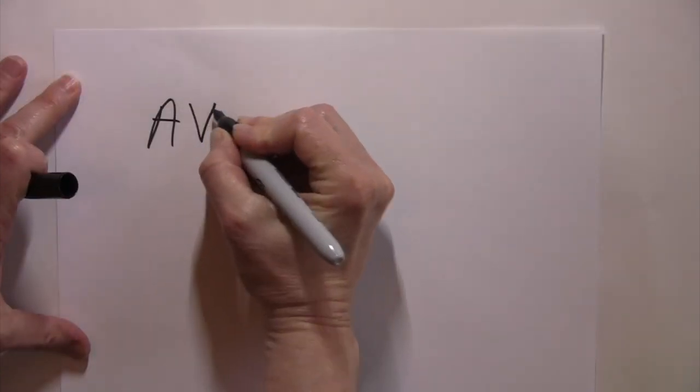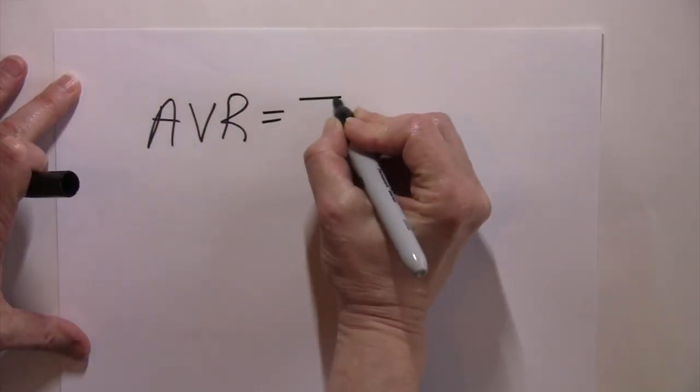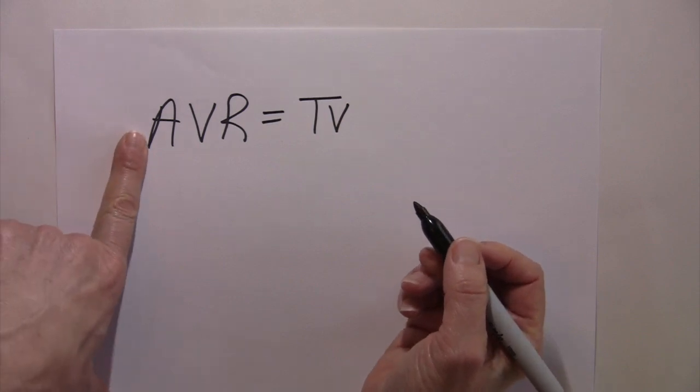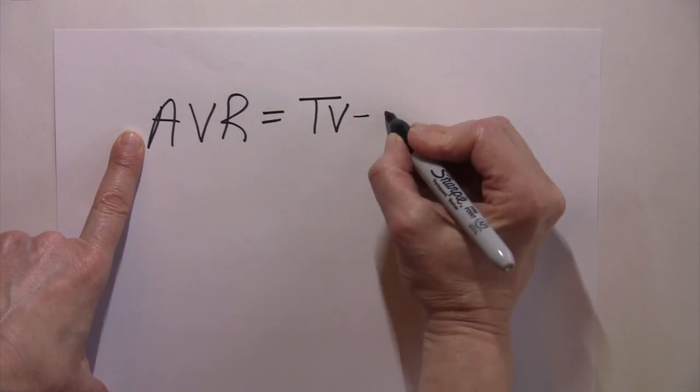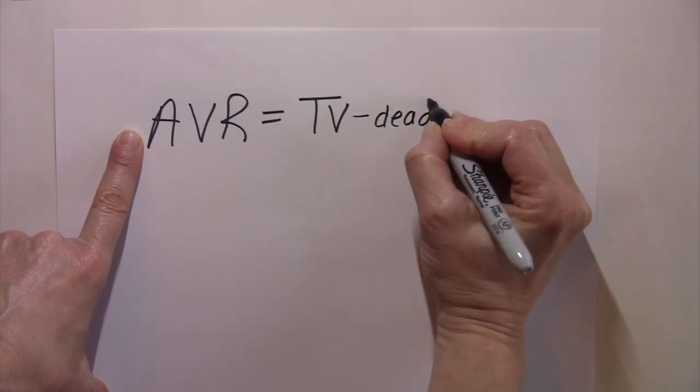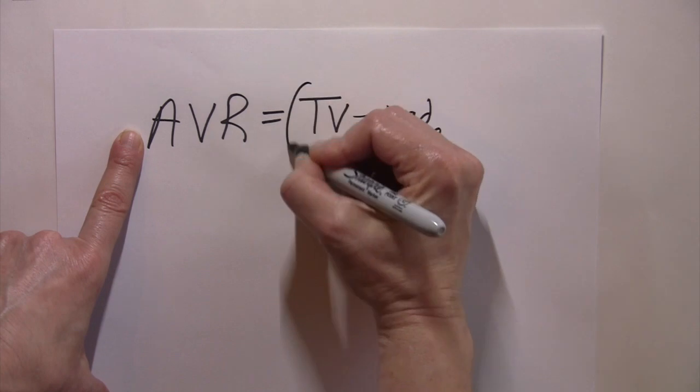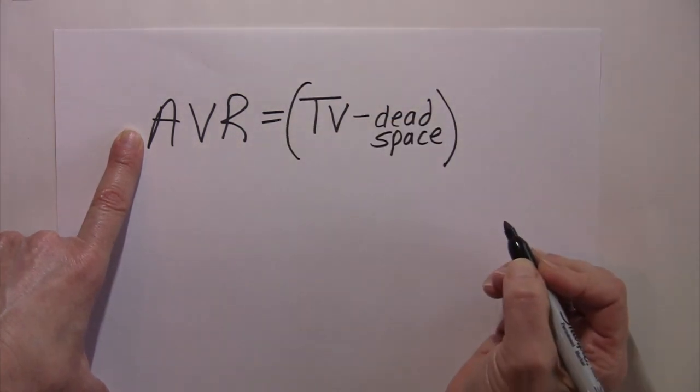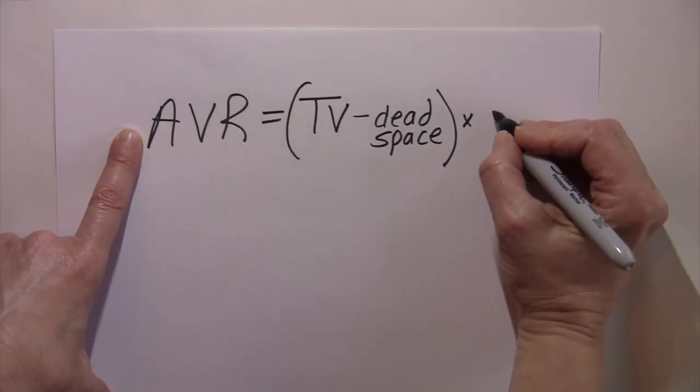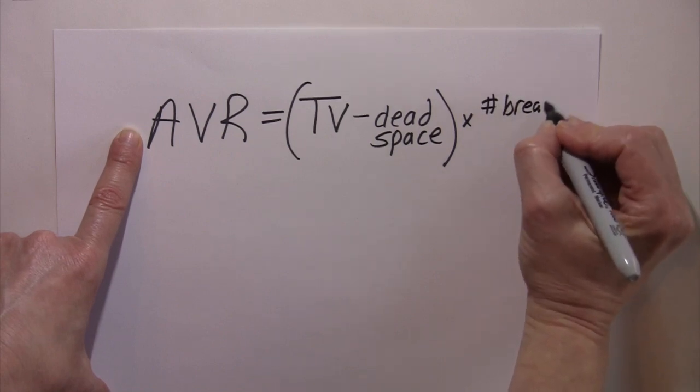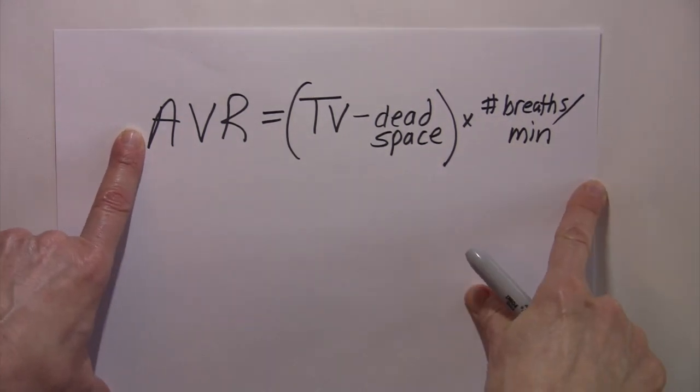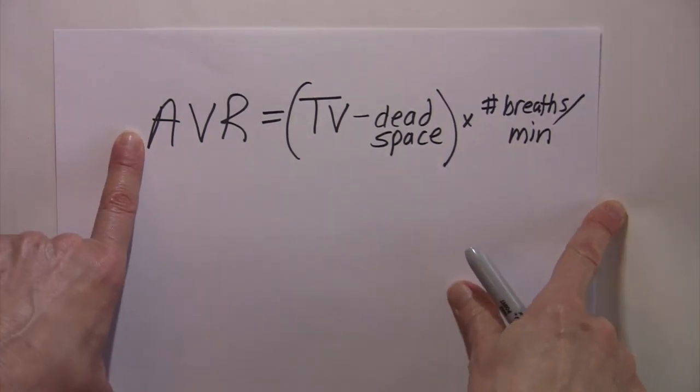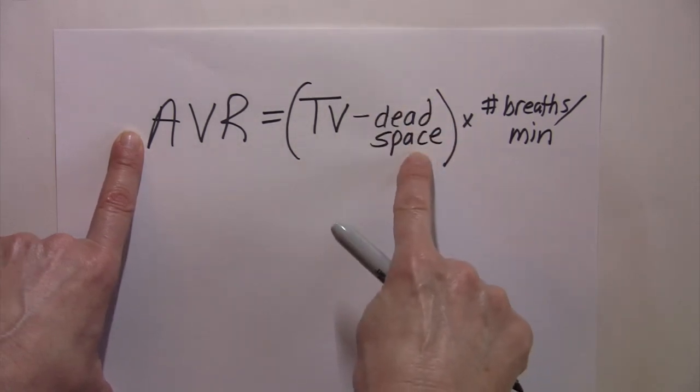So the alveolar ventilation rate is the tidal volume, same as ventilation, except instead of using the entire tidal volume, what we do is we're going to subtract the dead space from that tidal volume. So we'll take the tidal volume, subtract the dead space from it, and then still multiply it times the frequency of breathing or the number of breaths per minute. And so the alveolar ventilation rate you can see is an equation that's similar to the minute respiratory volume. You're just correcting it for the dead space.